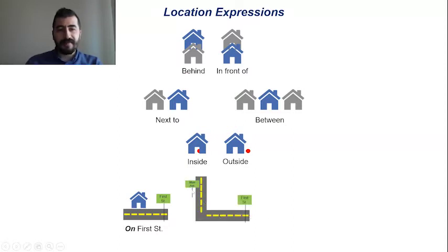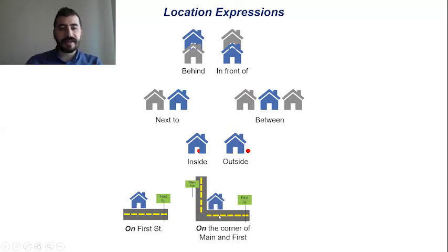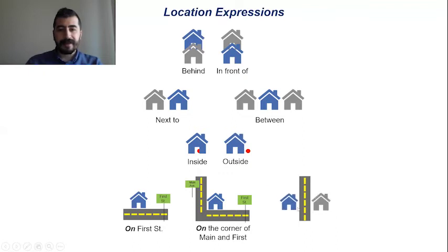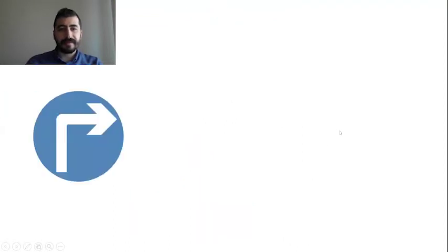We have Main Avenue here and First Street here. It is on the corner — corner. On the corner of Main Avenue and First Street. And look at that — there is a road here, and the blue house and the gray house are opposite. Inside. Outside.